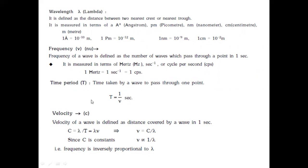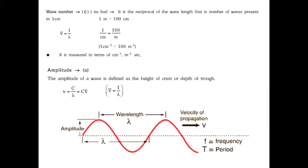Time period is the time taken by a wave to pass through one particular point, and is the reciprocal of frequency. Velocity, represented by C or V, is the distance traveled by a wave in one second. C equals the product of wavelength and frequency: C = νλ, which can be rearranged for wavelength or frequency. Wave number, represented by ν̄, is the reciprocal of wavelength — the number of waves present in a unit distance; its SI unit is per meter or per centimeter.